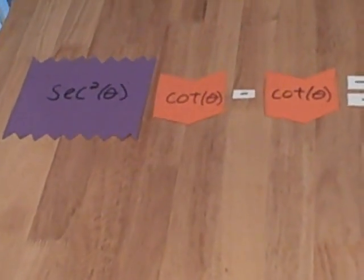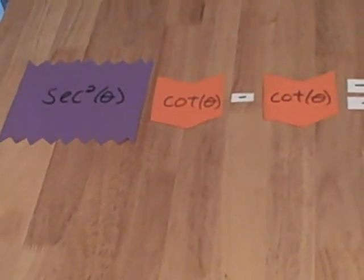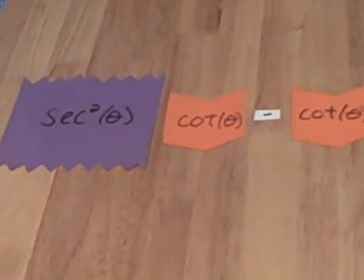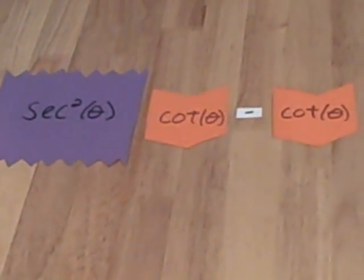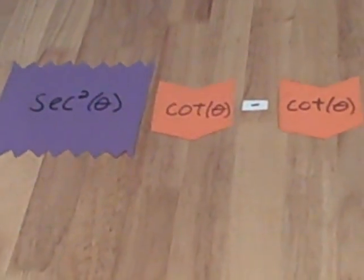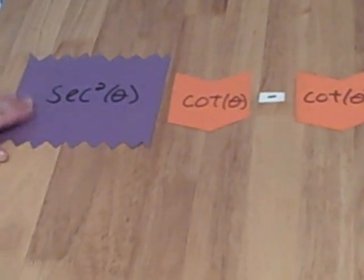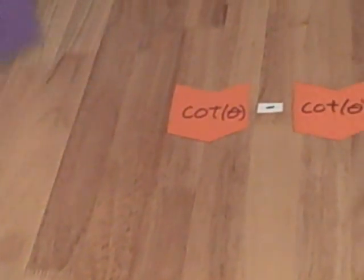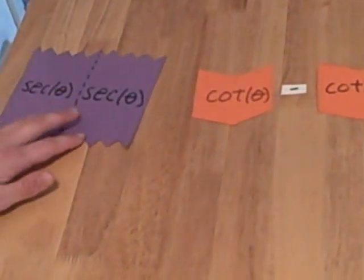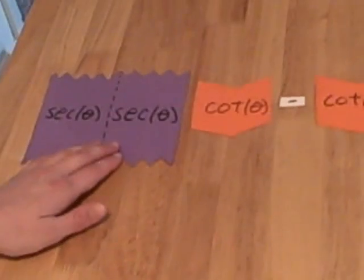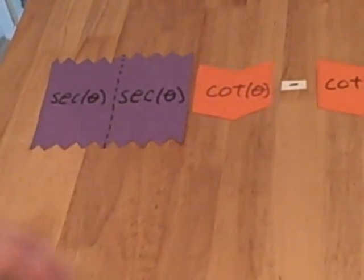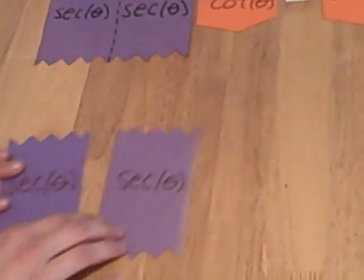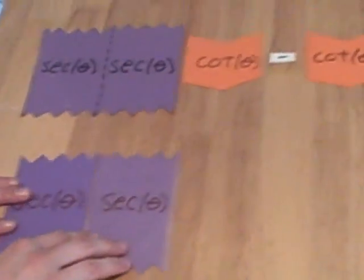The thing to remember when manipulating trig functions is you always want to break the pieces down into the smallest units. Let's look at our first manipulative, which is secant squared. If we flip this over, we see that secant squared is nothing more than secant times secant. So we will pull up two of our secant manipulatives.